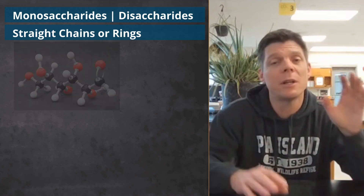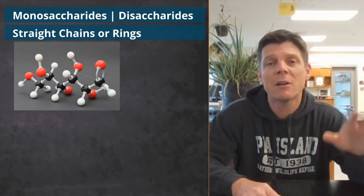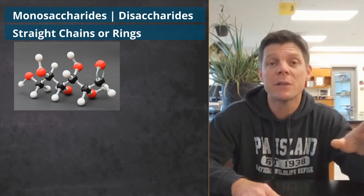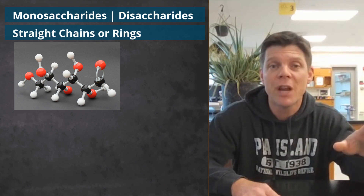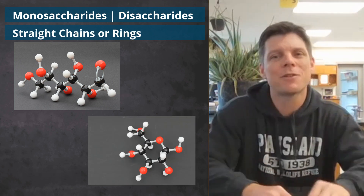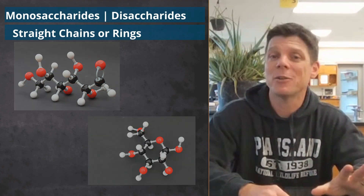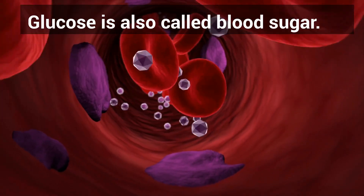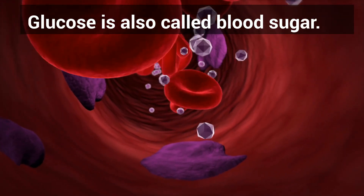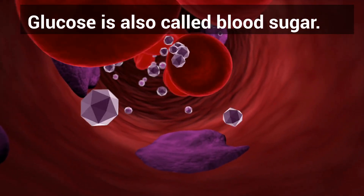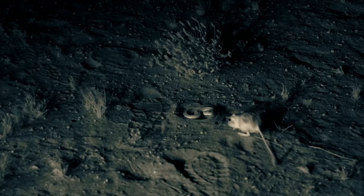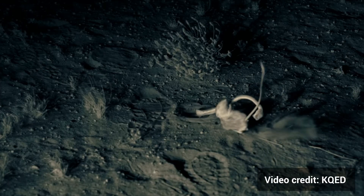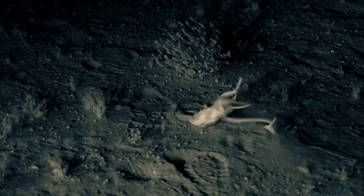Simple sugars include monosaccharides and disaccharides. These molecules may exist as linear chain molecules or cyclic structures containing rings. Simple sugars like glucose can be broken down by the body very quickly to provide a quick burst of energy, perfect for a rodent looking to avoid capture by a hungry predator.